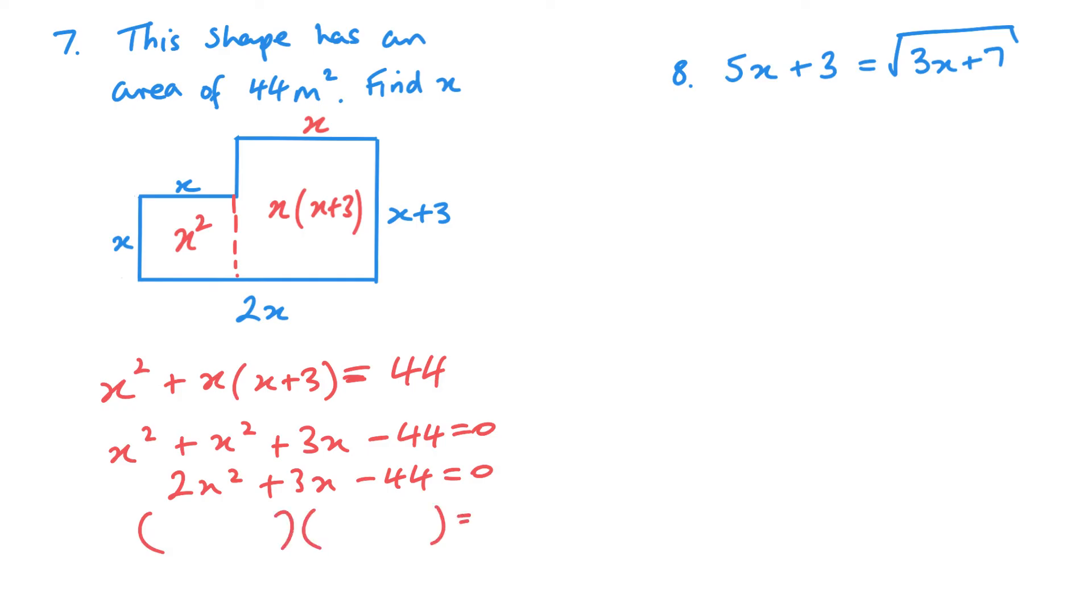We've got 2x and an x. 44, what jumps out is 4 and 11. 2 times 4 is 8. 8 and 11 has a difference of 3. I want a positive 11 to equal the 8. We've got 2x plus 11 equals 0, or x minus 4 equals 0. x equals minus 11 over 2, and x equals 4 as my two answers.